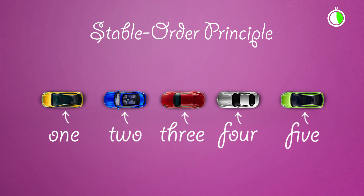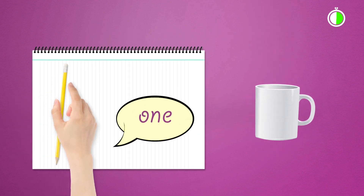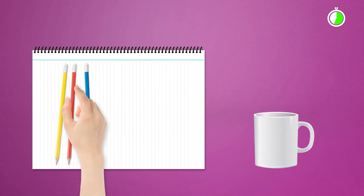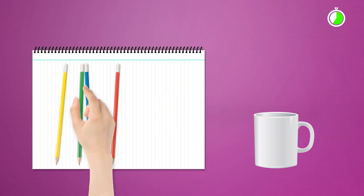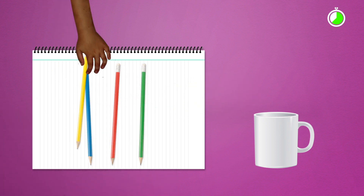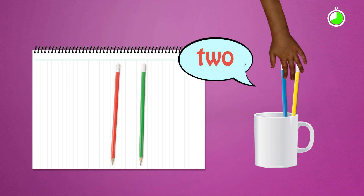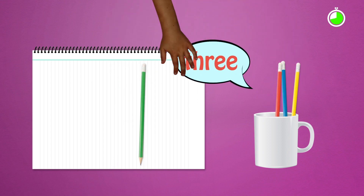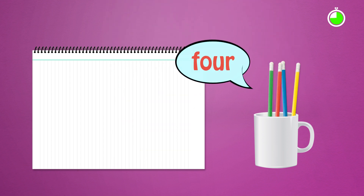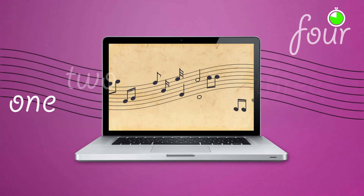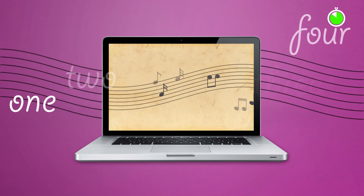What should I do if a student does not say the number names in the right order? It is important that you provide many opportunities for your students to count objects they can touch. The key is for you to model the correct order of the number names. Do this many times and in many different ways, and each time you should ask the student to repeat them back to you. And don't forget there are many engaging tunes and nursery rhymes that can also help students to learn the correct order.